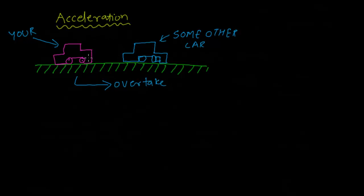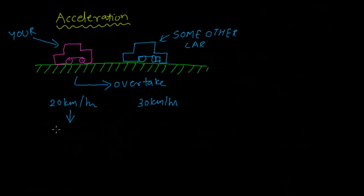To overtake that car, you will need to boost your speed up. You need to increase your speed such that it is more than the speed of the other car. If you are currently traveling at 20 km per hour and the other car is traveling at 30 km per hour, you would need to increase your speed to at least 31 km per hour. But if you want to overtake with extreme speed, you may increase your speed to 60 km per hour.